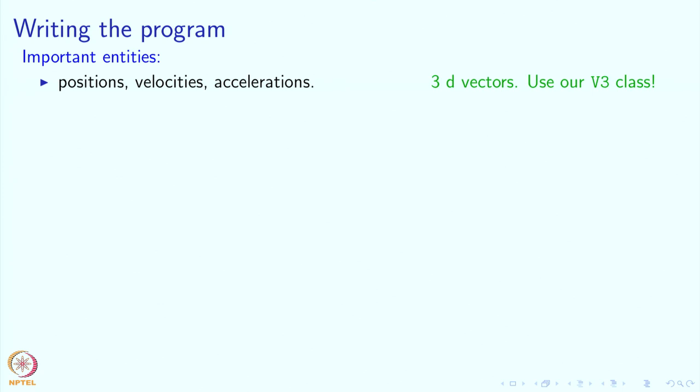That is exactly what we will use. So instead of thinking of it as an array of 3 elements, we will use our V3 class. If you remember, our V3 class was developed so that we can add two vectors together by writing plus, or multiply a vector by a scalar by writing star. That will make our code very easy to understand — we would not have to write loops over the 3 components. We can just say U plus V to add vectors U and V.